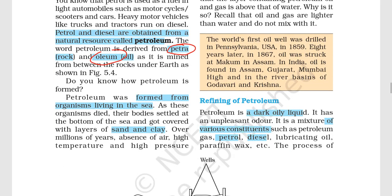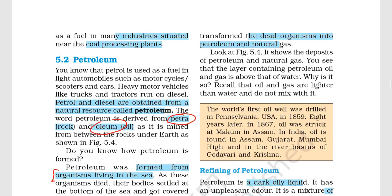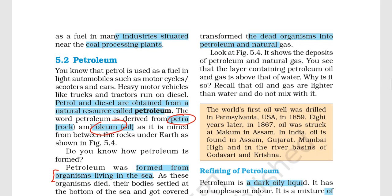Petroleum was formed from organisms living in the sea. Just as coal came from vegetation, petroleum came from sea organisms. When these organisms died, their bodies settled at the bottom of the sea. Layer after layer of sand, clay, and other material built up over millions of years. In the absence of air, with high temperature and high pressure, these dead organisms were slowly converted into petroleum and natural gas.